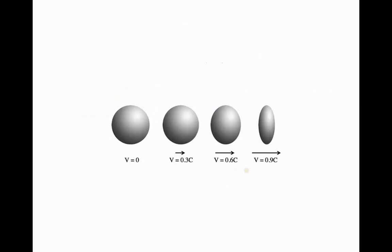For example, consider a sphere moving with some velocity. When v equals zero, the size is normal. As velocity increases, the size decreases — the radius decreases along the direction of velocity. So if an object is moving in any direction with a certain velocity, the changes also depend on that direction.